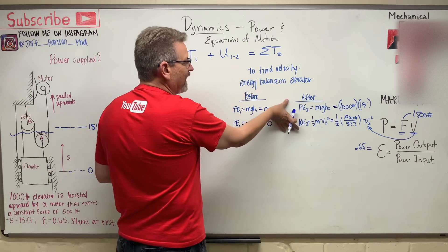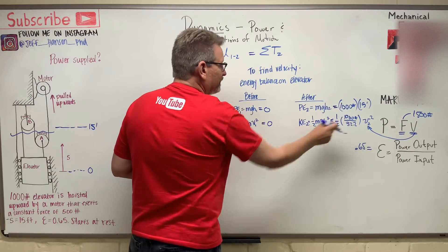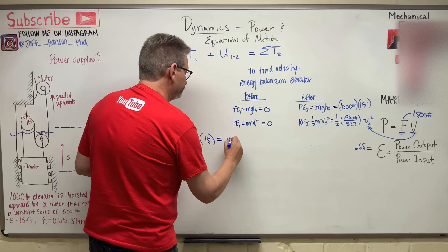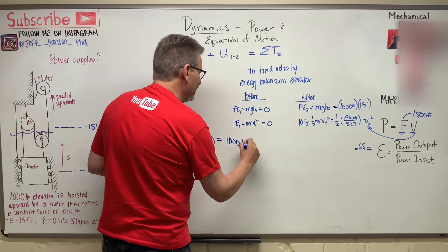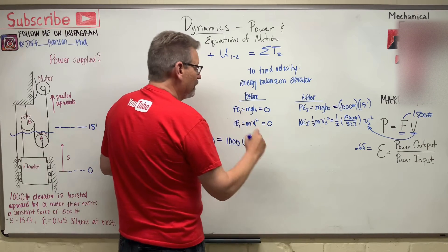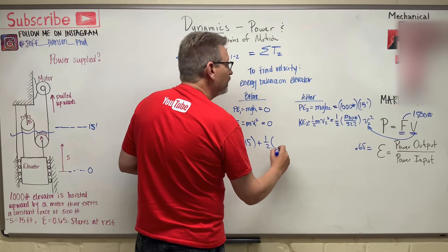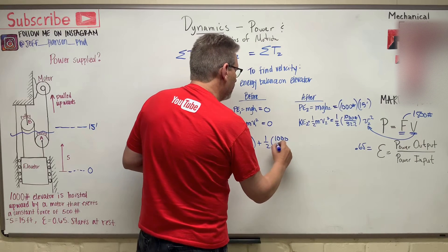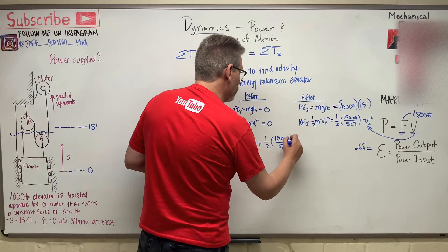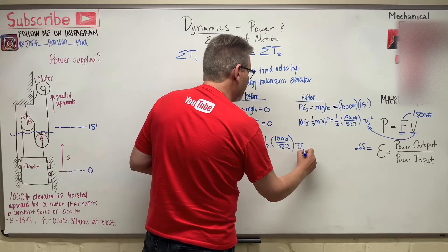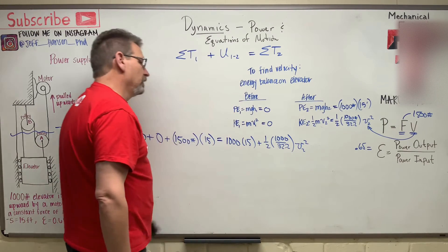now we have our sum of the energies afterwards, so this plus that. So 1,000 times 15, plus 1 half, 1,000 divided by 32.2 times the velocity squared. So let's see if we can solve for that guy.